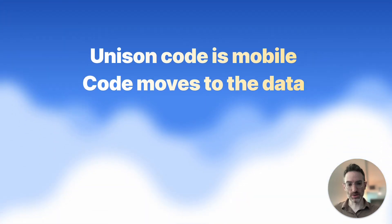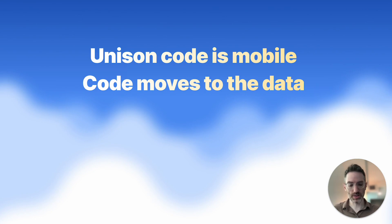But in Unison, we get to do something different. Code in Unison is mobile. It can be deployed on the fly to different locations in an instant, without any possibility of dependency conflicts.